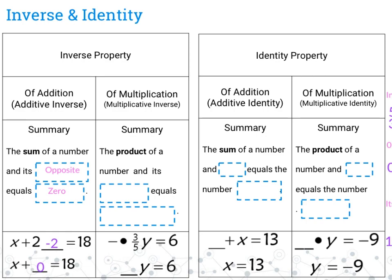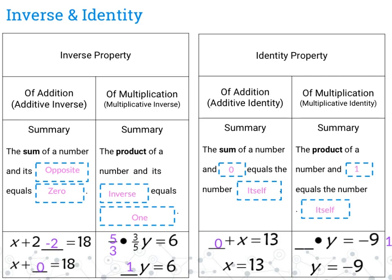The multiplicative inverse property says the product of a number and its inverse equals 1. The inverse of 3 fifths would be 5 thirds, and when multiplied together they give positive 1. The additive identity property says the sum of a number and 0 equals that same number — so x plus 0 gives you x. The multiplicative identity property says the product of a number and 1 equals itself — so 1 times y gives you y.